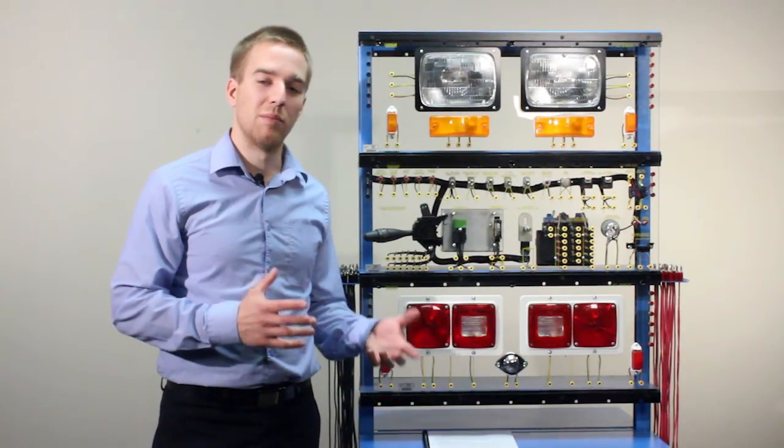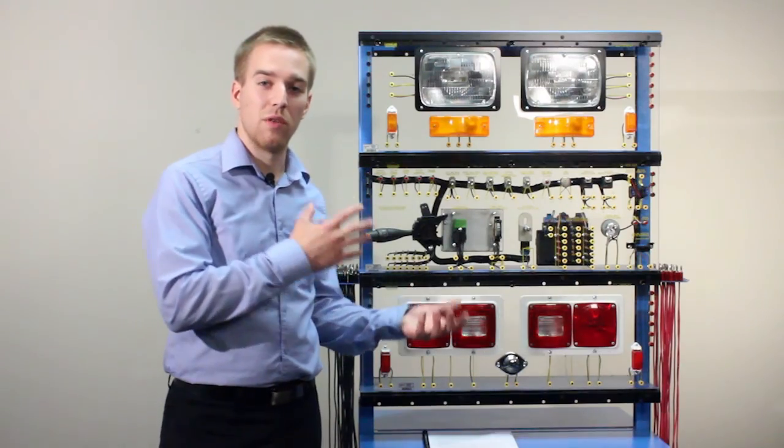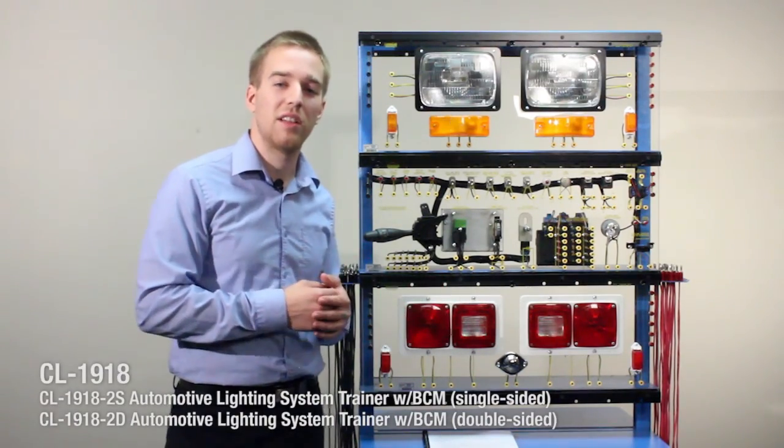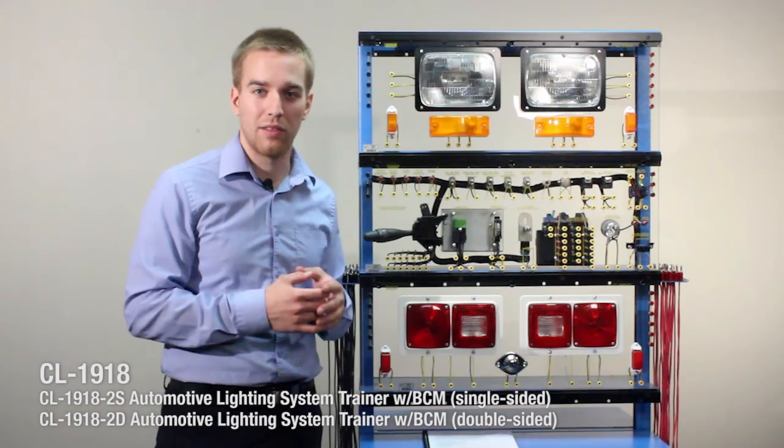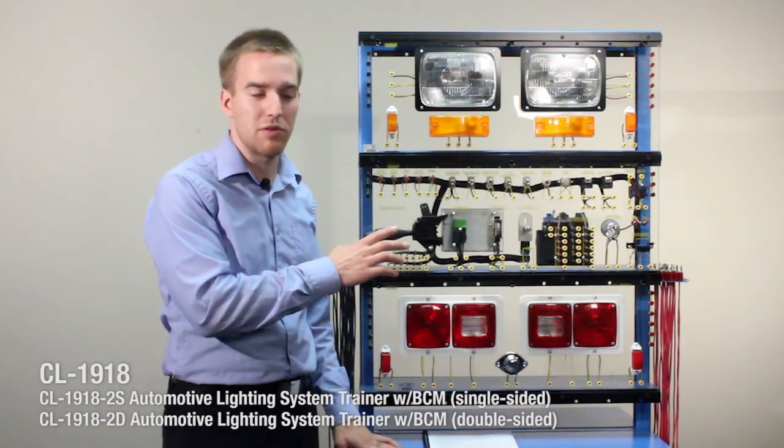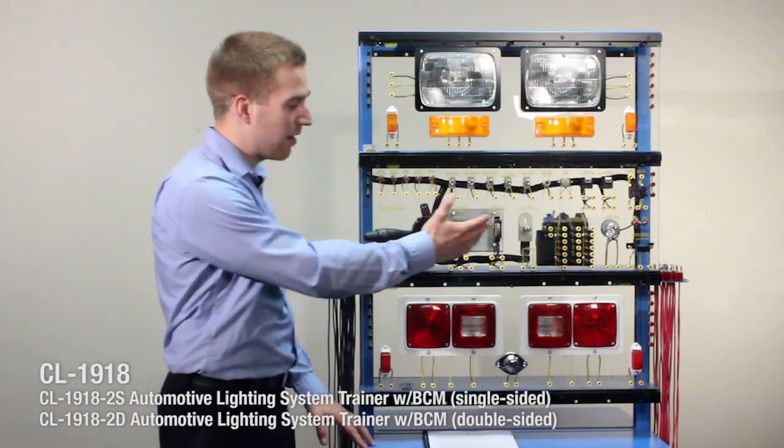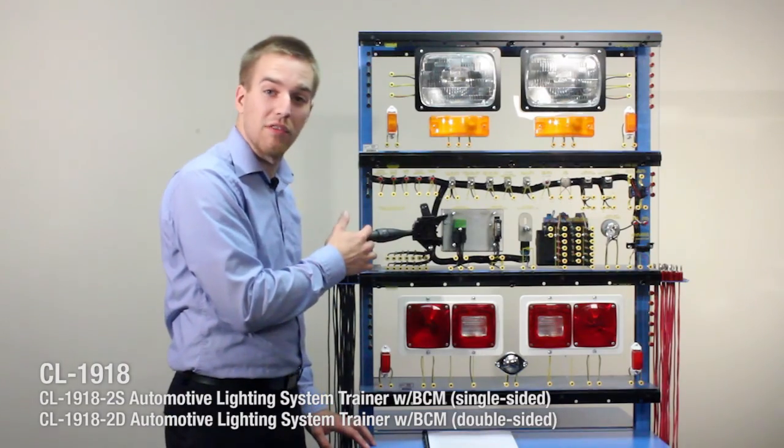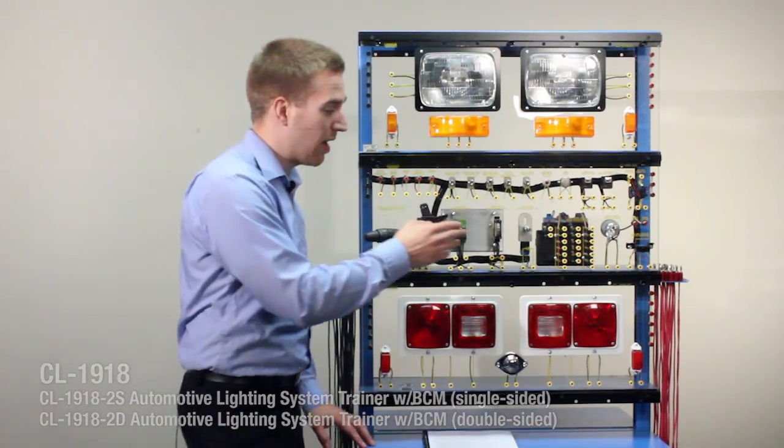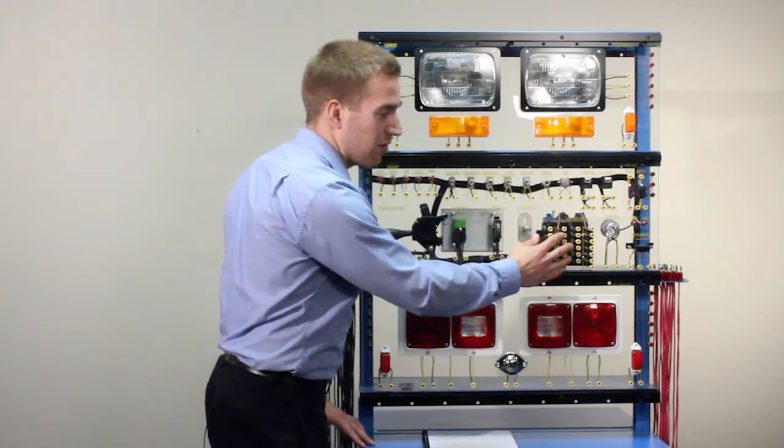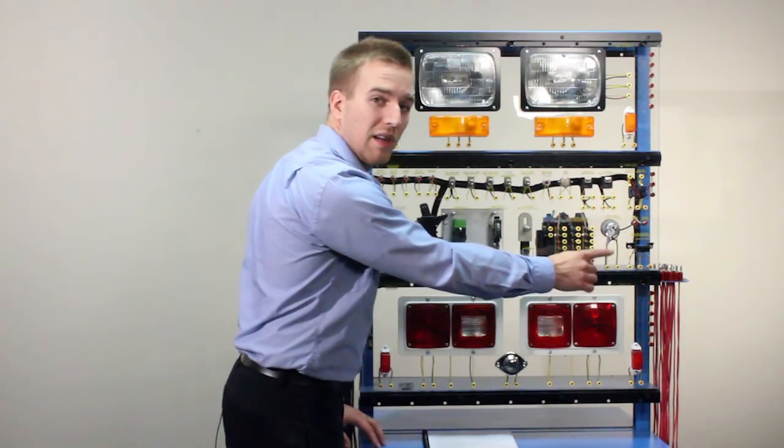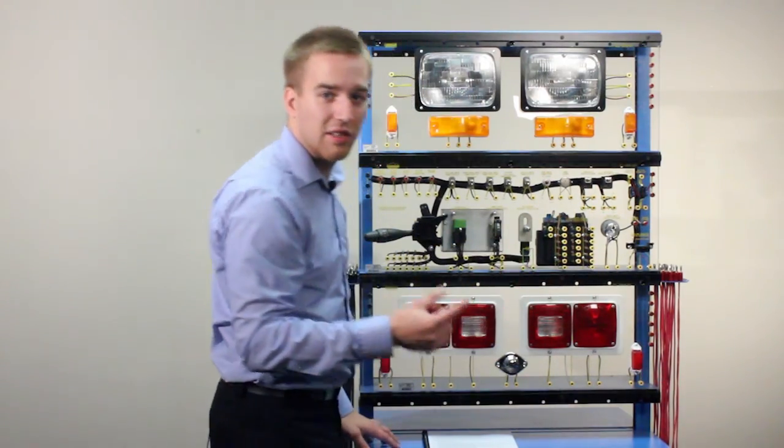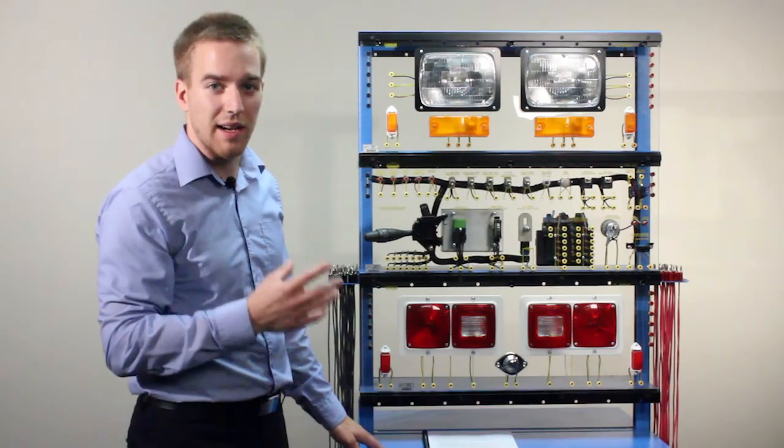Now let's talk a little bit more about the differences. We're now looking at a different model. This is a CL 1918 2S and this has a body control module. We can see that on our center panel we now have a different multi-function switch. We have dimmer, the body control module. We also have a data link connector, a standardized OBD2 16 pin data link connector.